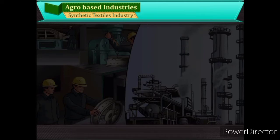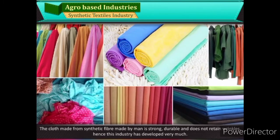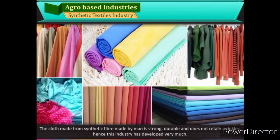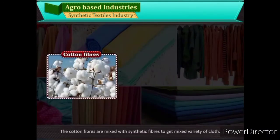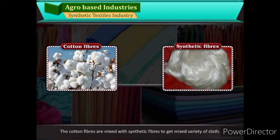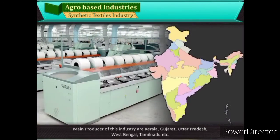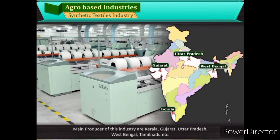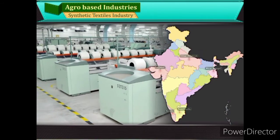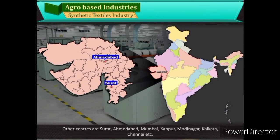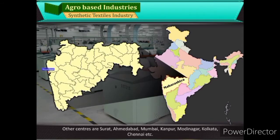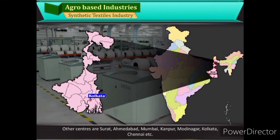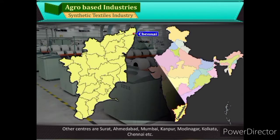Synthetic Textiles Industry: The cloth made from synthetic fiber is strong, durable, and does not retain wrinkles. Hence, this industry has developed very much. Cotton fibers are mixed with synthetic fibers to get a mixed variety of cloth. Main producers are Kerala, Gujarat, Uttar Pradesh, West Bengal, Tamil Nadu, etc. Other centres include Surat, Ahmedabad, Mumbai, Kanpur, Modinagar, Kolkata, Chennai, etc.